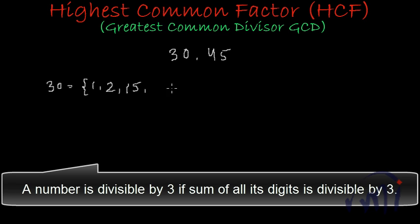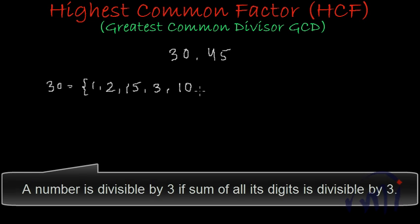3 plus 0 is 3, and 3 is divisible by 3, so 30 will be divisible by 3 also. If I divide 30 by 3 I get 10. So 3 will be a factor of 30 and at the same time 10 will also be a factor of 30.